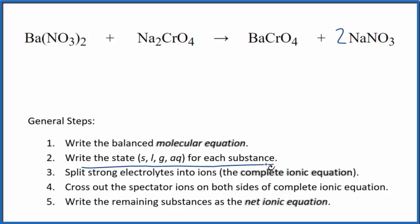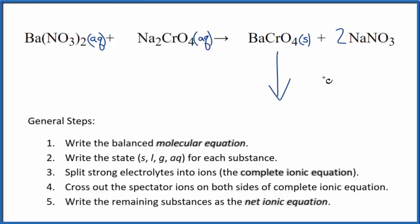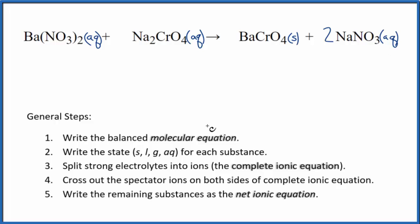Now we can write the state for each substance. Nitrates, if you know your solubility rules, are very soluble — aqueous, they'll dissolve and dissociate into ions. Sodium compounds are also very soluble. When we get to the chromates though, chromates in general are not soluble. Barium chromate is only slightly soluble, so we say it's insoluble — a solid precipitate. This is a precipitation reaction. Nitrates and sodium compounds are very soluble, so we write Aq.